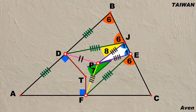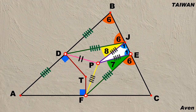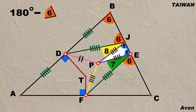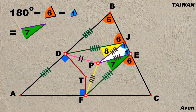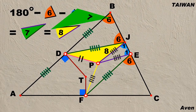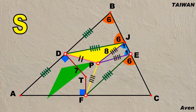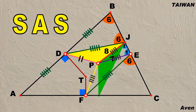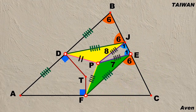Now let's watch angle 7 and angle 8. Since 180 degrees minus angle 6 and minus angle 1 equals angle 7 or angle 8, the green triangle is therefore congruent to the yellow triangle because of the relation side-angle-side. Thus, DP is equal to PF.